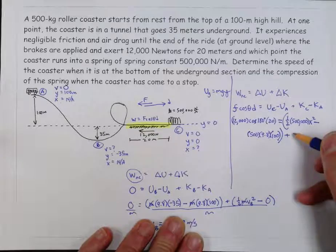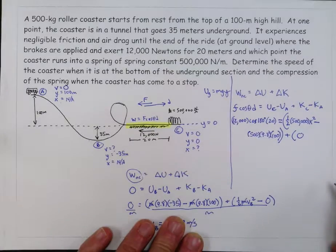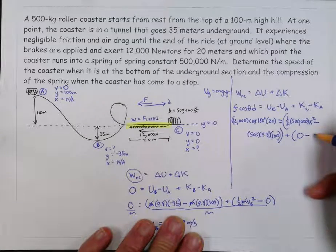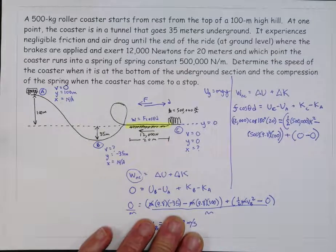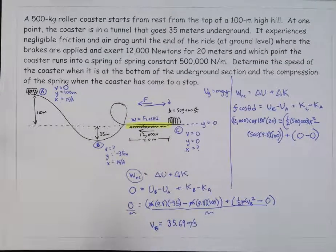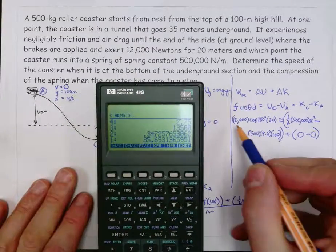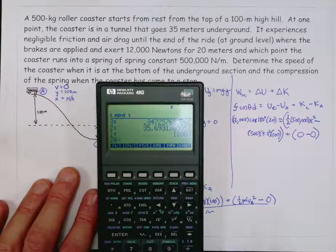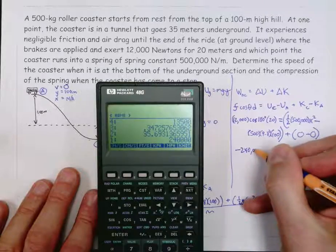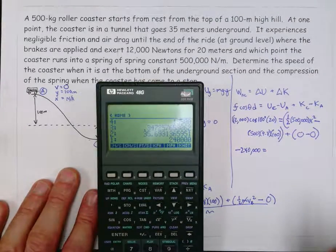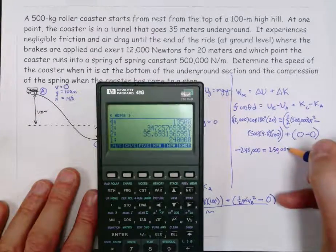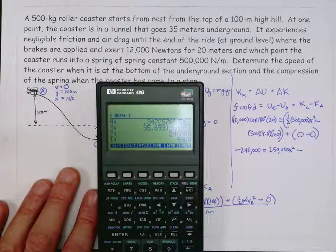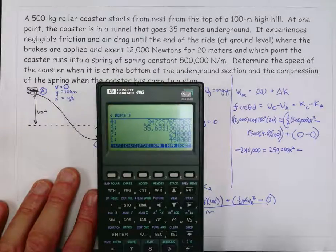And now let's talk about the kinetic energy. Well, the kinetic energy at c is zero, because it comes to a momentary stop. And the kinetic energy at a is zero also, because it started from rest. So that is the equation that you have to solve to come up with a value for x. So let me do that. Let me multiply these things together. It's basically 12,000 times negative one times 20. And so that's negative 240,000. And that's equal to 250,000 x squared minus 500 times 9.8 times 100, which is 490,000.